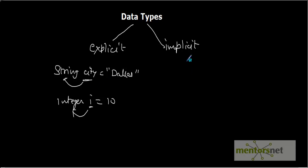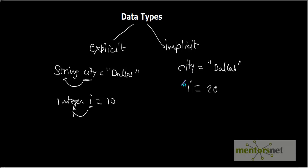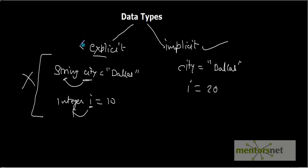Implicit type of declaration is declaring variables without specifying the data types, like city equals to Dallas or i equals to 20. In VBScript, explicit declaration won't work — VBScript supports only implicit declaration of variables. It doesn't support explicit declaration.